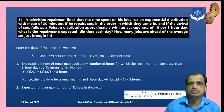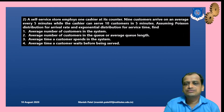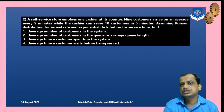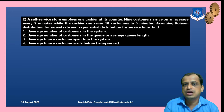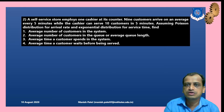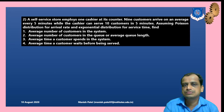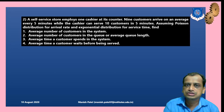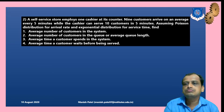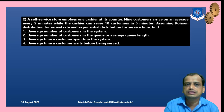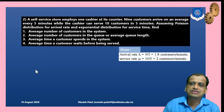Problem 2: A self-service store employs one cashier. The arrival rate is one customer every 5 minutes on average (Poisson), and the service rate is 10 customers in 5 minutes (exponential). We need to find four things: average number of customers in the system, average queue length, time a customer spends in the system, and time a customer waits in the queue.